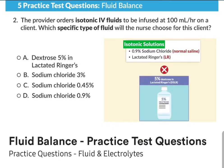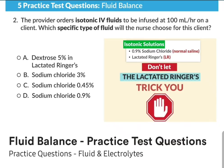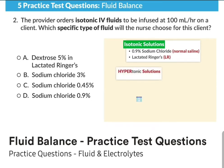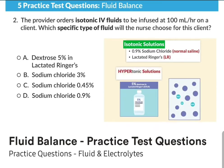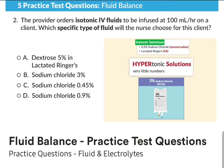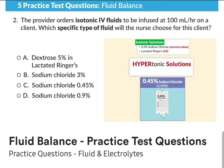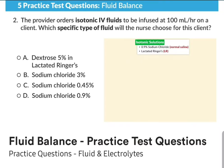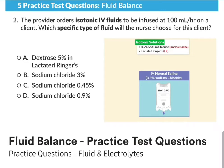Looking at the answer options: Option A, dextrose 5% in lactated Ringers, is incorrect — it's tricky but wrong. It's not isotonic; it's actually hypertonic, since the dextrose makes it a thick, sugary solution with many solutes. Option B, sodium chloride 3%, is a hypertonic solution. Option C, sodium chloride 0.45%, is a hypotonic solution. Option D, sodium chloride 0.9%, is correct — this is our top-tested isotonic solution.